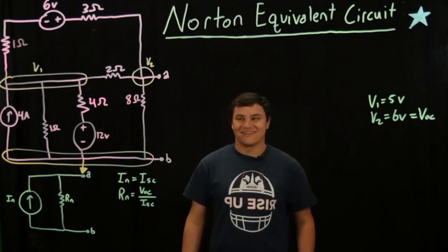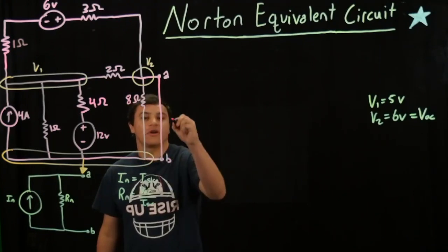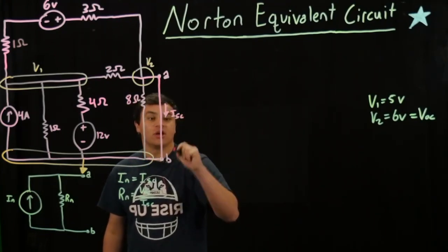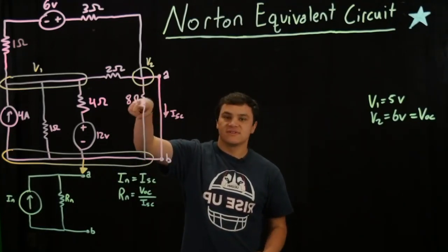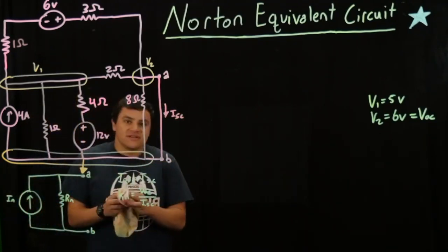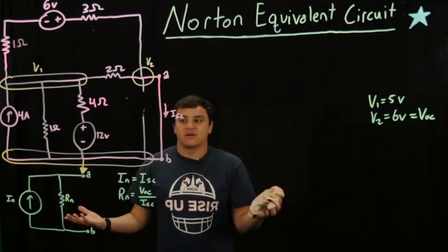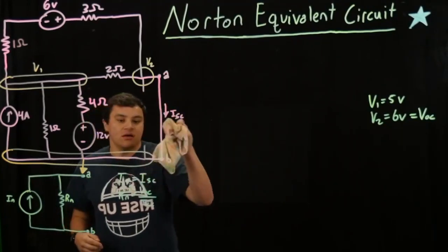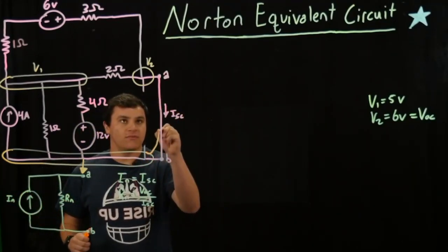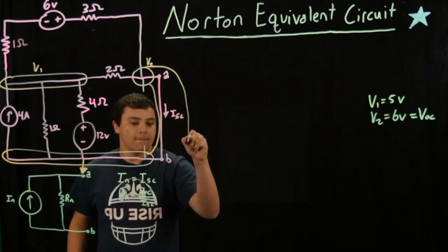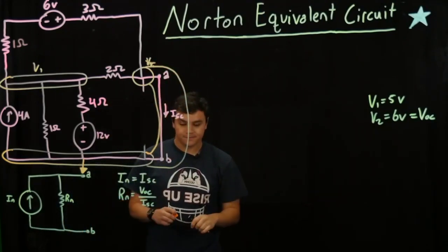Now we're going to perform our short circuit test. We put a short wire from node A to B, and we look for the current I short circuit. When we connect a wire across the resistor, we can essentially remove the resistor, because all the current wants to flow through the short circuit wire. This makes the reference node extend upward into one bigger node, so we no longer have a V2 — it's just part of our reference ground node.